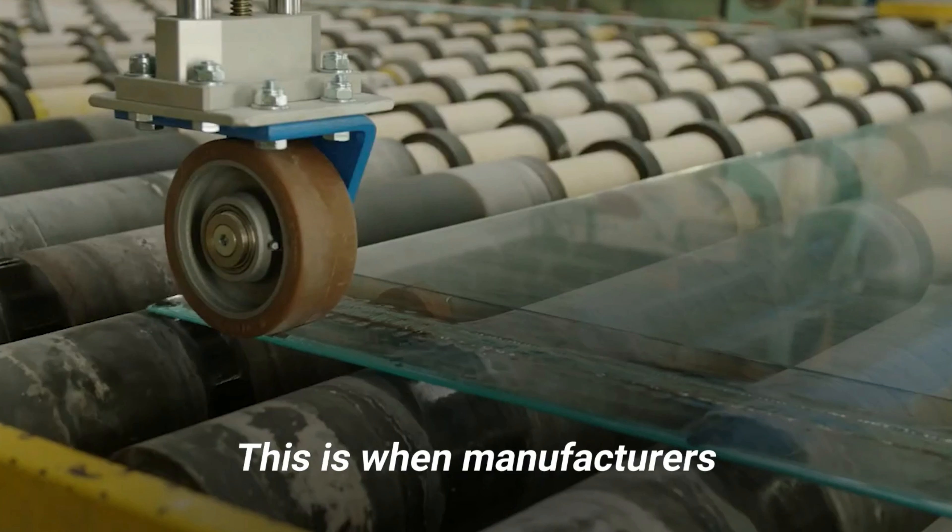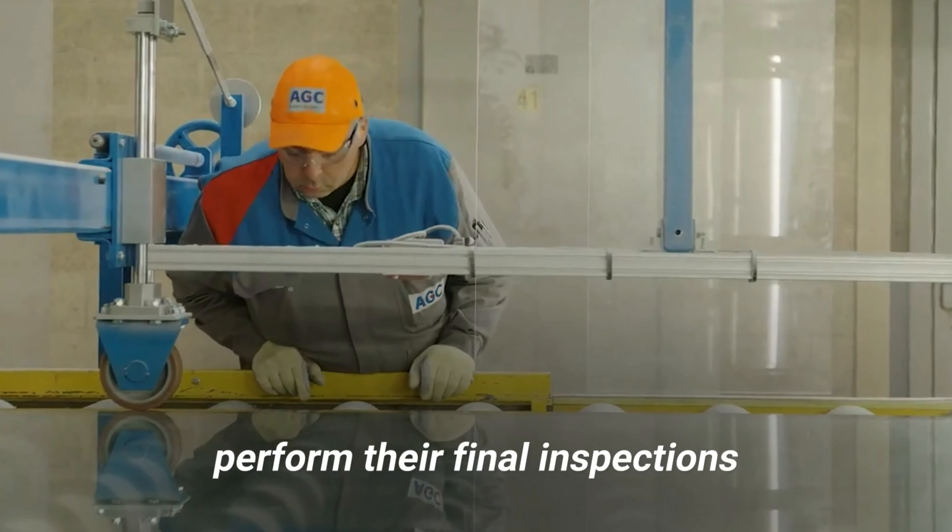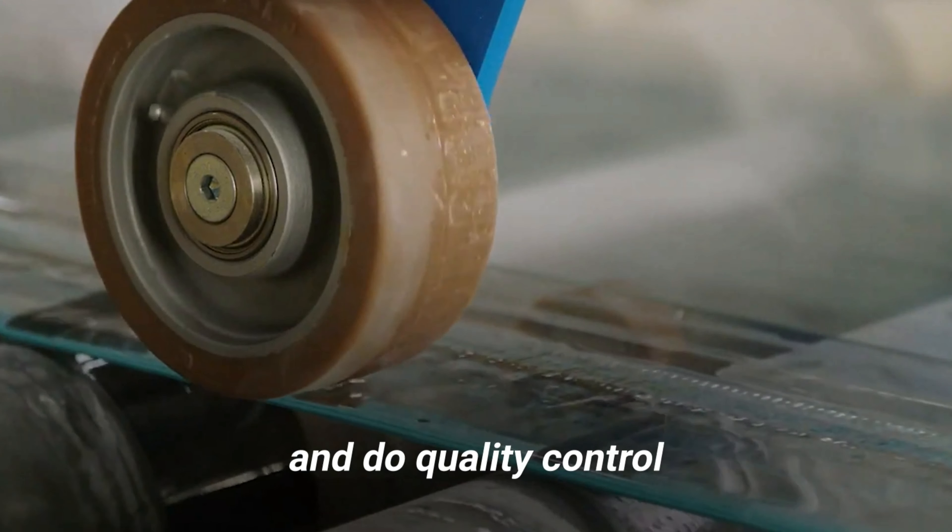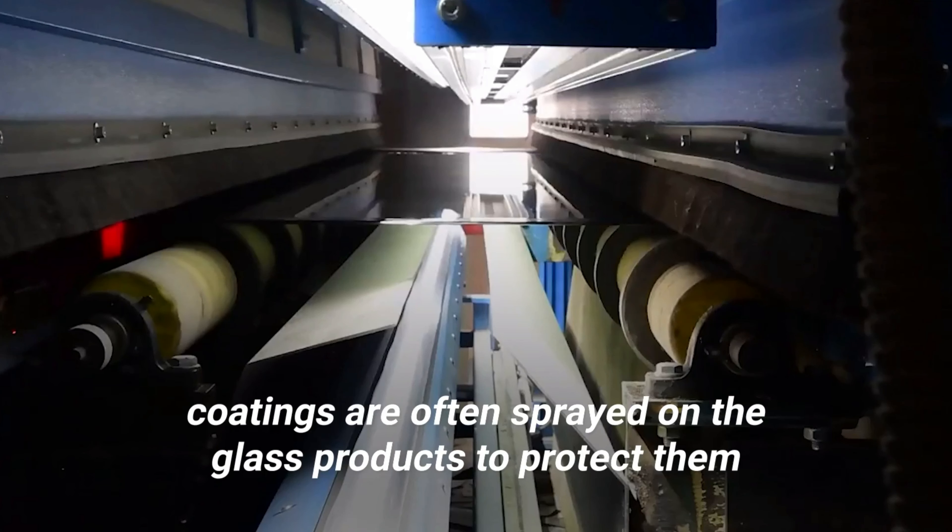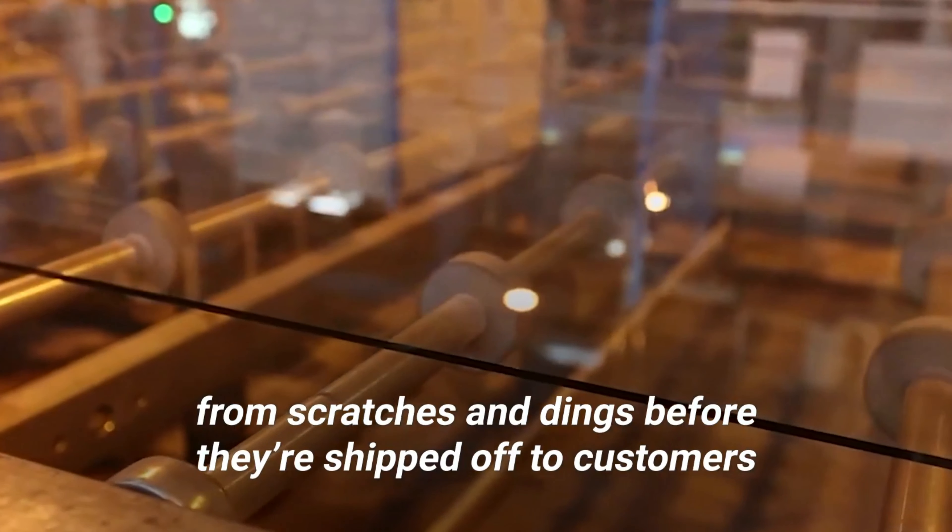This is when manufacturers perform their final inspections and do quality control. At this stage, coatings are often sprayed on the glass products to protect them from scratches and dings before they're shipped off to customers.